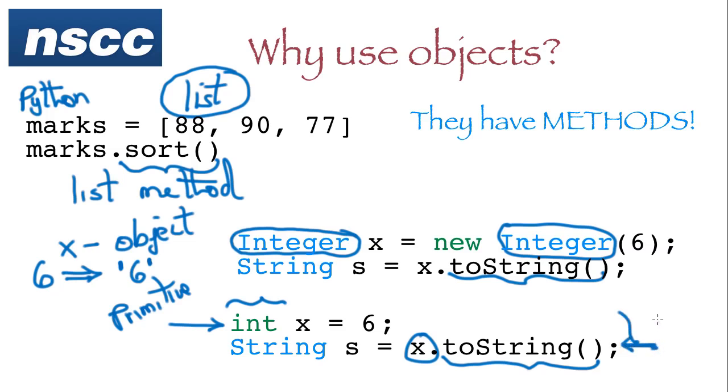Because it's going to say you can't use this method on a primitive. So the advantage of using objects is that there are many methods that you can use which can make your programming life much easier.